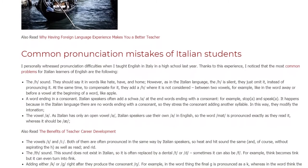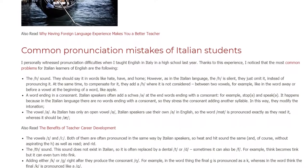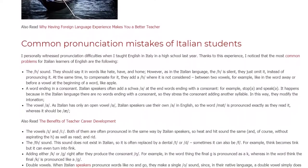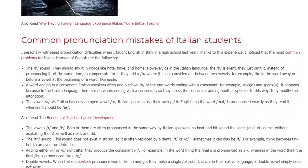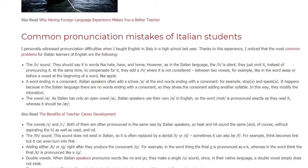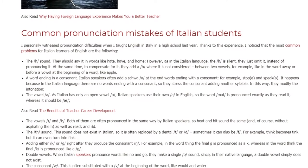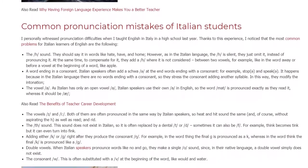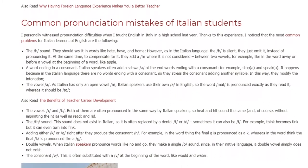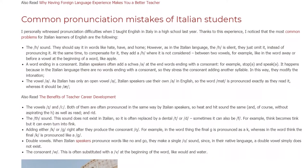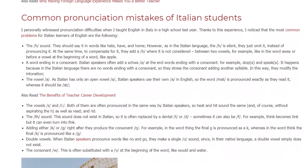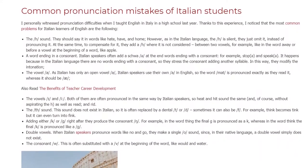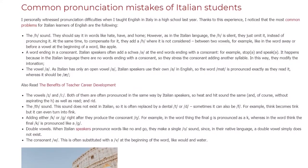The vowel A: as Italian has only an open vowel A, Italian speakers use their own A in English, so the word 'mad' is pronounced exactly as they read it, whereas it should sound like 'ash.' The vowels E and I: both are often pronounced in the same way by Italian speakers, so 'heat' and 'hit' sound the same, and of course without aspirating the H, as well as 'read' (present) and 'read' (past).